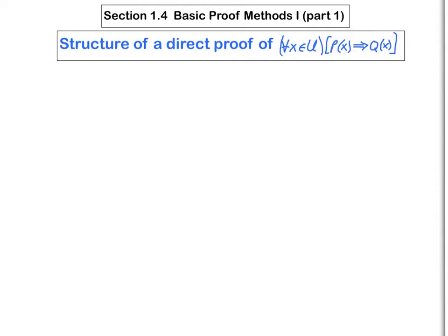Now we know from the last two lines of the truth table of a conditional statement that when P of x is false, then by definition, the entire conditional statement is considered to be true. And therefore, the only case that concerns us is the one where P of x is true.